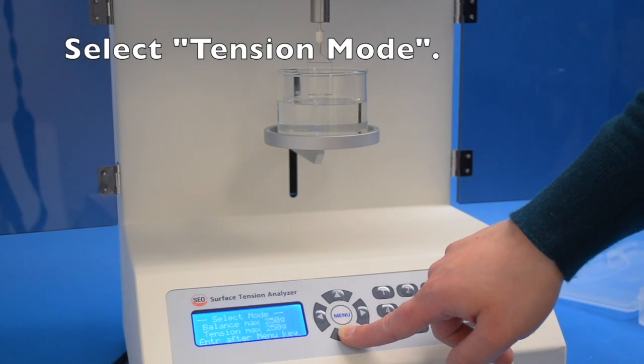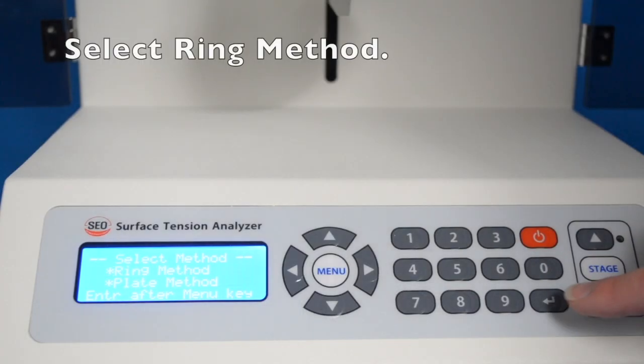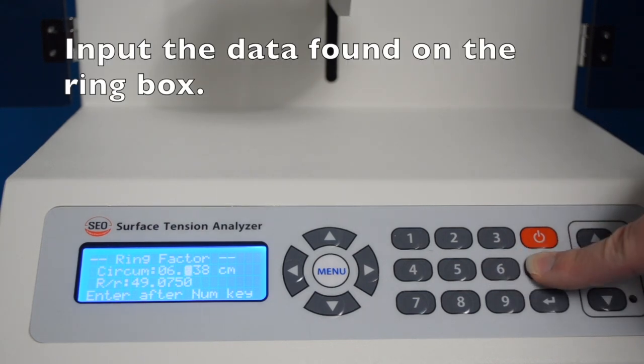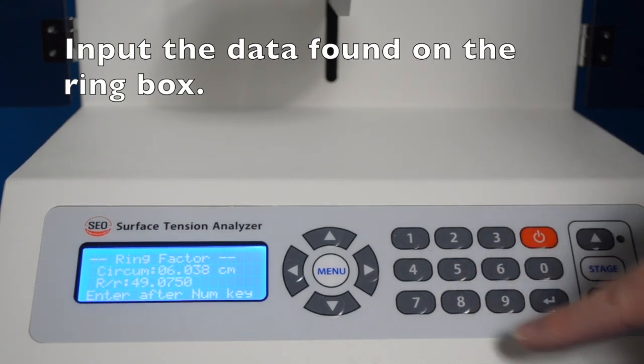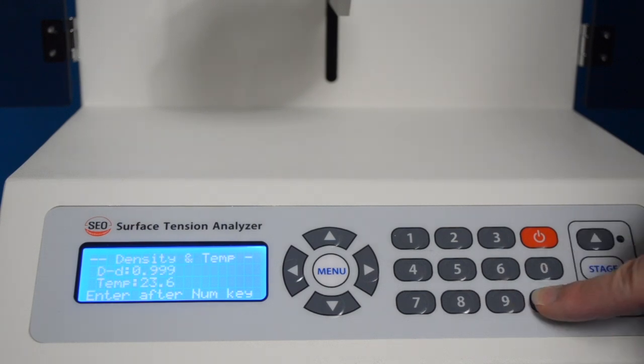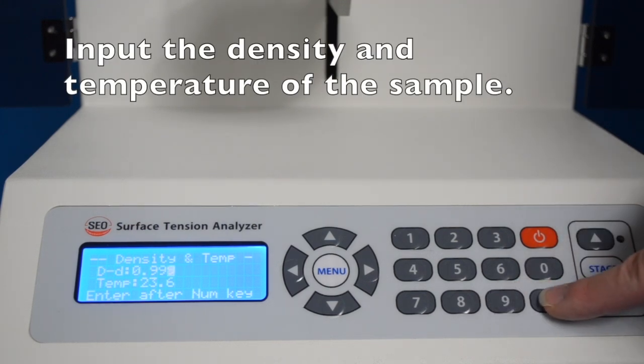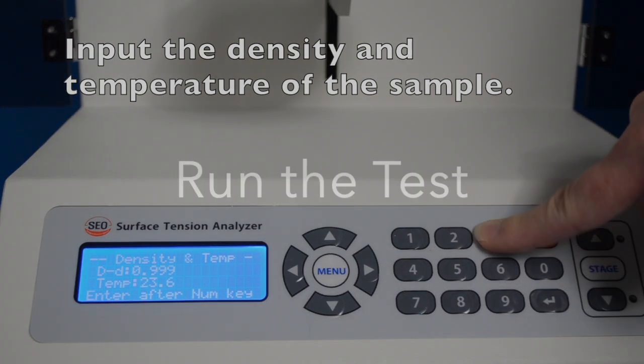Here is a quick review of the instrument's parameters. First, you select ascension mode, then you select the ring method. Then you input the data found on the ring box. And finally, you put in the density and temperature of the sample. That's all there is to it.